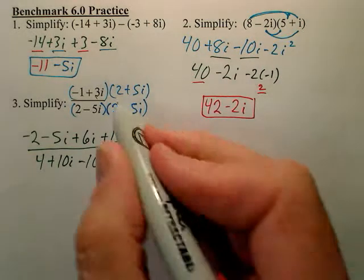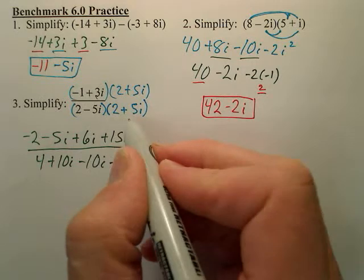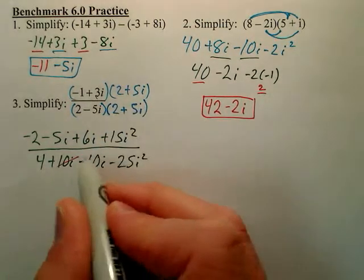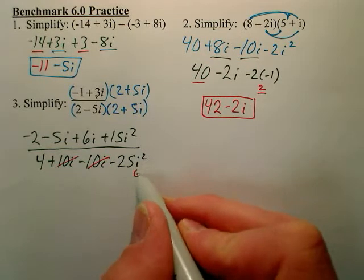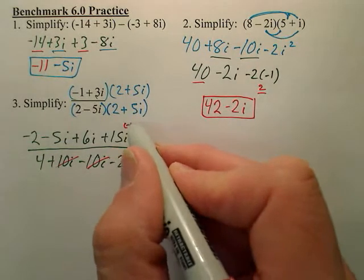Now if you multiply by the right piece, this is called the conjugate. If you multiply by the right piece, these two should always drop out, leaving you no i's. The i squared, that's negative 1. This one's also negative 1.